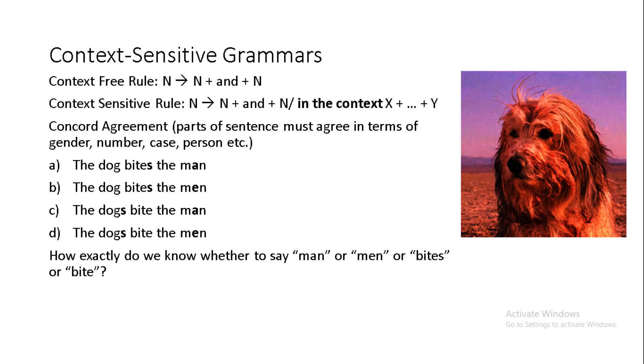Thus far, we have treated rewrite rules as things which can function without any contextual restrictions, but this was largely just to put forth the abstract idea of rewrite rules in a pretty much hypothetical form, which is a good deal simpler than what goes on in real natural language. In contrast with the context-free rule, rewrite n as n plus and plus n, etc., we will now consider the hypothetical context-sensitive rule. Rewrite n as n plus and plus n in the context x plus ellipsis plus y. For a very basic example of a context-sensitive rule, just consider the problem of concord or agreement.